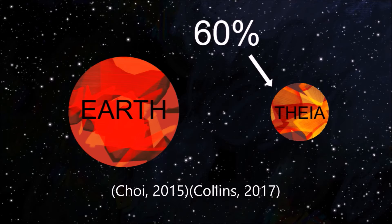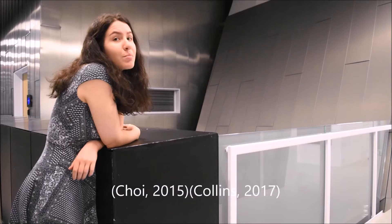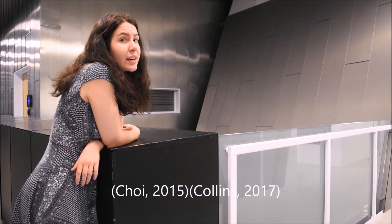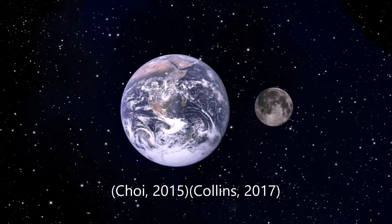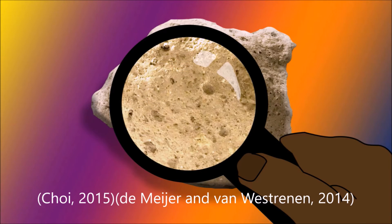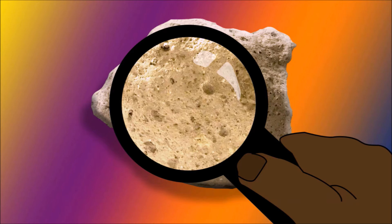There are several arguments against the giant impact theory. Simulations predict that at least 60% of the material that formed the moon comes from Theia, which is problematic due to other bodies in the solar system being characterized by their own unique chemical compositions. If the moon was mostly made of material from Theia, then its composition must differ from Earth's. However, lunar rock samples with titanium, silicon, and neodymium isotopic ratios varying at most a few parts per million from the Earth's contradict these models.